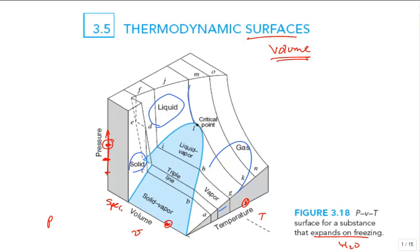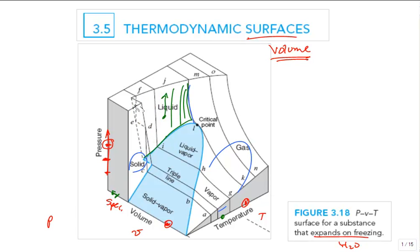The liquid region is a very steep surface going up in this region, back where the dashed line is. What does that steep surface physically mean? If I'm at a particular temperature and specific volume and try to compress it — try to increase the pressure — the specific volume barely changes. Liquid water is very incompressible, so the pressure shoots right up for small changes in specific volume.